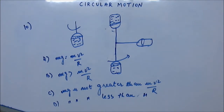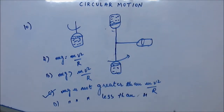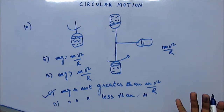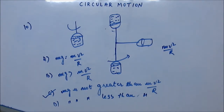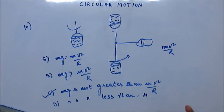The right option is option C. When the bucket moves in a circular path, the centripetal acceleration required is mv²/r. If we draw the FBD of the water — assuming no viscous force between the bucket's inner surface and the water — then the only downward force on the water is mg.